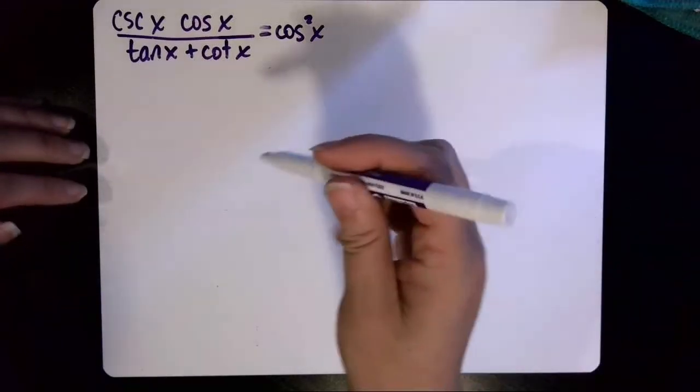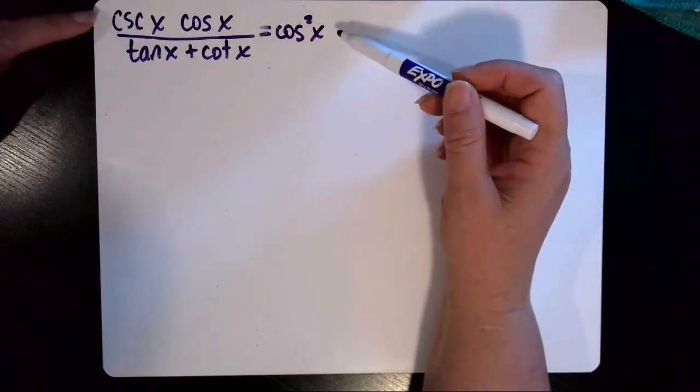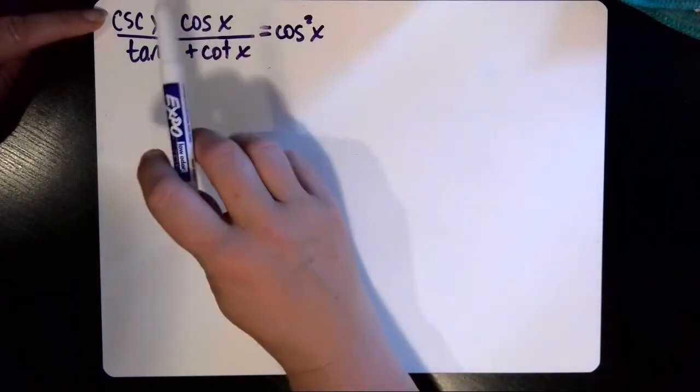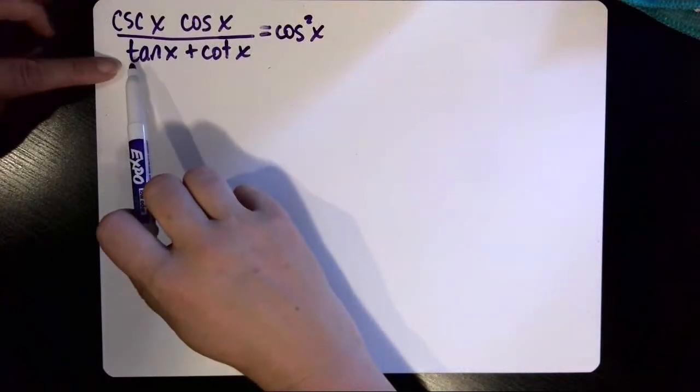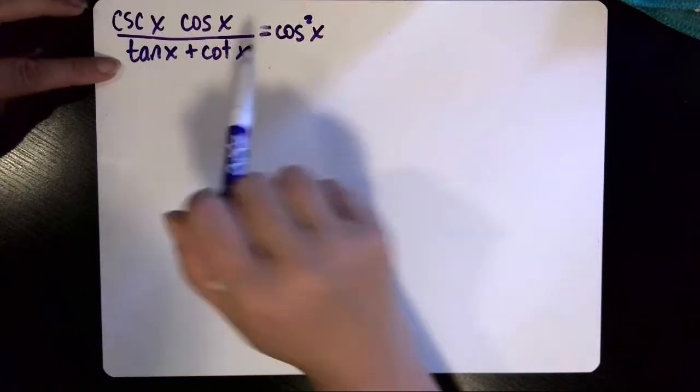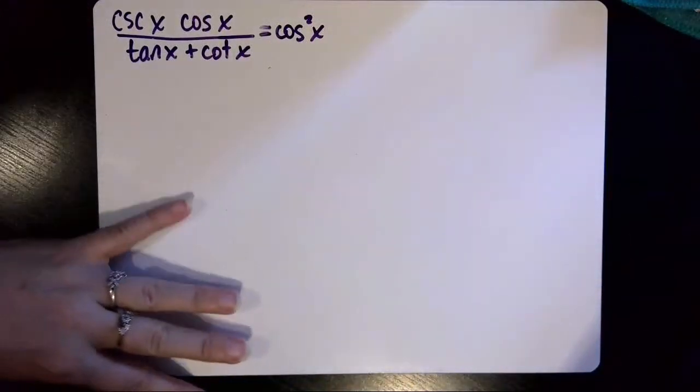Okay, so in this video, we want to verify the trig identity: cosecant x times cosine x, all divided by the quantity tangent x plus cotangent x, equals cosine squared x. Step number one in verifying trig identities is always to start with the more complicated side as your given information.